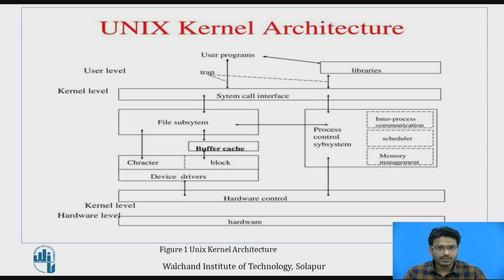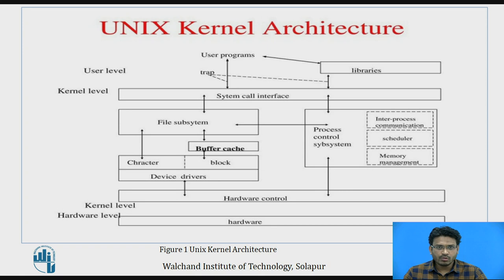After the file subsystem, we come to the buffer cache, which is located between the file subsystems and the blocks. These blocks are connected to the device driver, which connects to hardware control. That hardware control interacts with the hardware level — the third level of the Unix operating system. The user writes a program, executes some functions, and when he wants to access hardware or kernel resources, he needs to execute system calls. Those system calls first interact with the file subsystem.